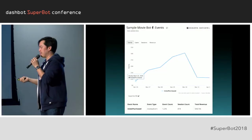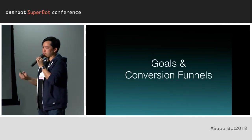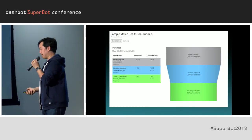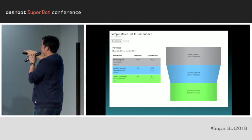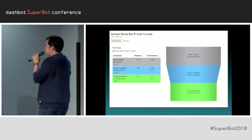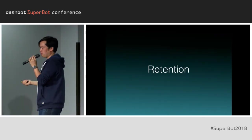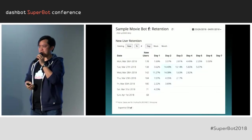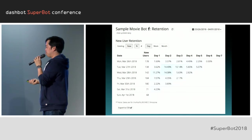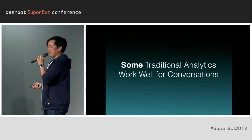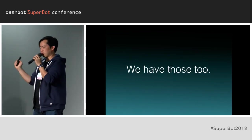We have a DashBot Events API that allows you to track these event-type things. Other more traditional analytics we handle are goals and conversion funnels. Here's the conversion funnel of our movie bot — the number of people that started a conversation, location supplied as an intermediate step, and how many people purchased the movie ticket. And of course, we love retention — how often do your users come back? Some traditional analytics do work well for conversations, and we do those too.